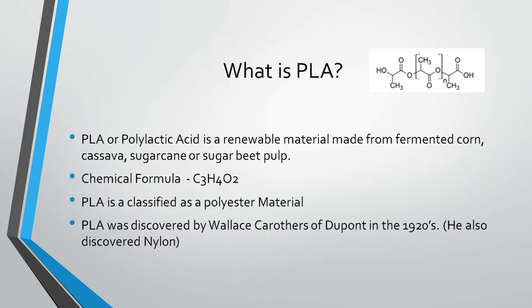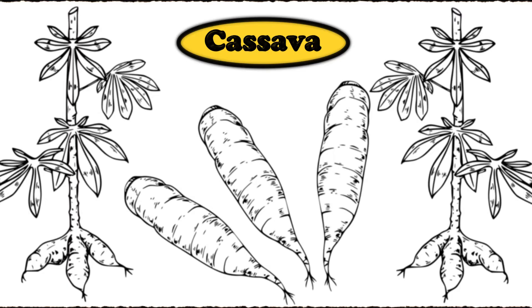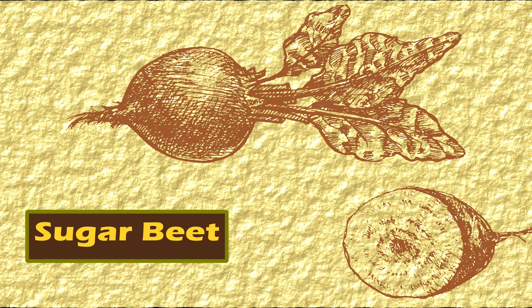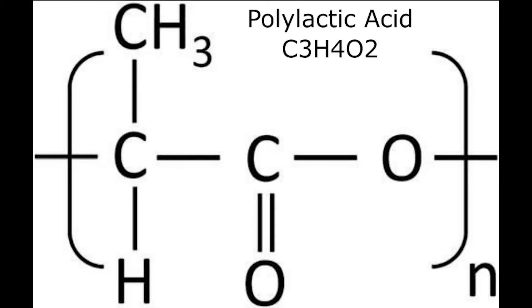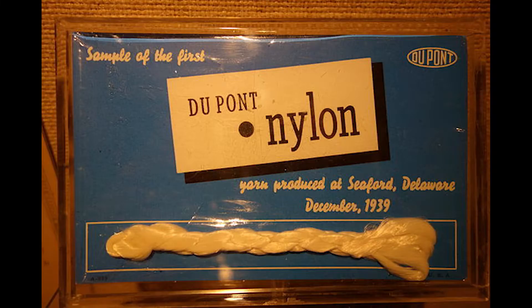So what is PLA? PLA, or polylactic acid, is a renewable material made from fermented corn starch, cassava, sugar cane, or sugar beet pulp, depending on where in the world you're at. Its chemical formula is C3H4O2 — 3 carbon, 4 hydrogen, 2 oxygen. PLA is classified as a polyester material and it was discovered by Wallace Carruthers of DuPont in the 1920s. By the way, he also discovered nylon.